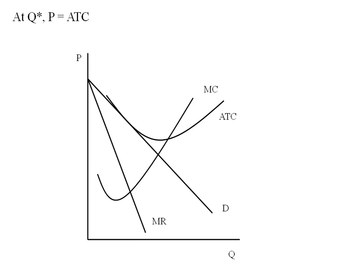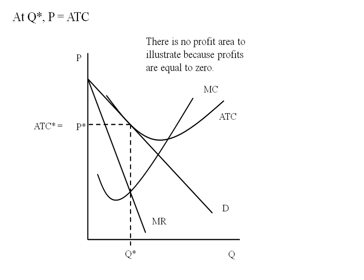Here's another example. First we find Q star where marginal revenue and marginal cost are equal. We go up to the demand curve and over to find P star. Then from Q star we go up to the ATC and over, and in this case it's the same point. We have a tangency right there. We're not going to illustrate any profit area because profits are equal to zero.